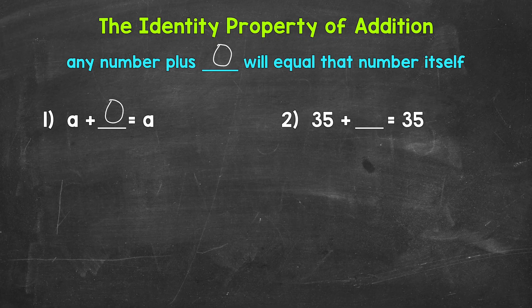Let's move on to number two, where we have 35 plus what equals 35. So again, how do we get this number to equal itself? Well, 35 plus zero equals 35. And that's the identity property of addition.